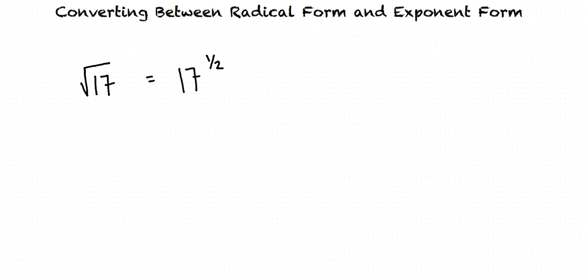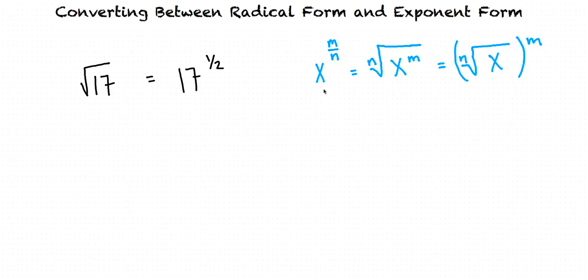I'm not really sure I understand why. Expressions involving fractional exponents can be rewritten using radicals. We can convert between radical and exponential notations using the following fact: x raised to the power of m over n equals the nth root of x raised to the m, which is the same as the nth root of x, quantity raised to the m.